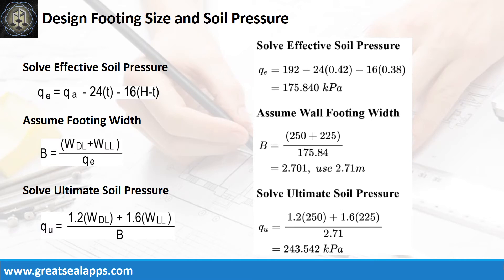Given allowable soil pressure equals 192 kPa, depth from natural grade line equals 800 mm, and assumed footing depth equals 420 mm, the effective soil pressure is 175.84 kPa. Given uniform dead load of 250 kN per meter and uniform live load of 225 kN per meter, the footing width is 2.71 meters and the ultimate soil pressure is 243.542 kPa.